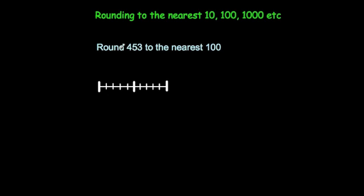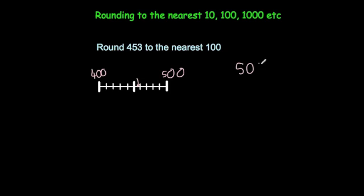Let's look at another one: round 453 to the nearest 100. Here's 400, here's 500, and we've got 450 in the middle. So 453 would be somewhere just past the middle here, which means it's going to be closer to 500.